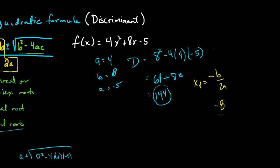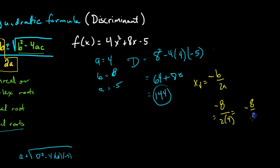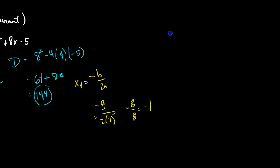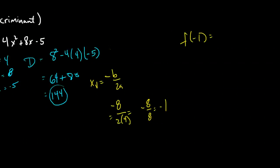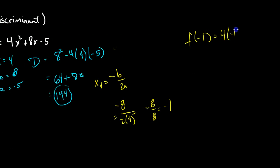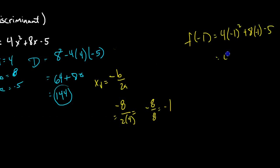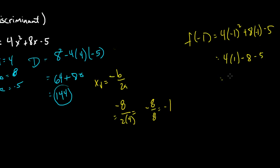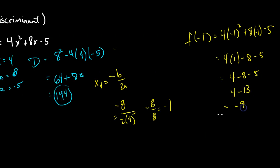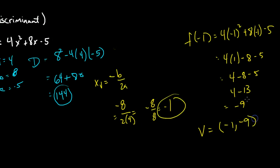So negative b is negative 8, over 2 times a which is 4, giving us negative 8 over 8, or negative 1. So x at the vertex is negative 1. That means f of negative 1 equals 4 times negative 1 squared plus 8 times negative 1 minus 5, which is 4 times 1 minus 8 minus 5, or 4 minus 13, which is negative 9. So our vertex is at negative 1, negative 9.